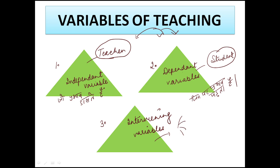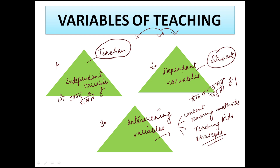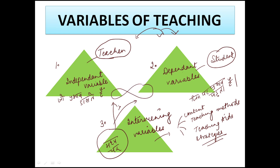The third variable is the intervening variable. Intervening variables include content, teaching methods, teaching aids, and strategies — all those variables we use for teaching. Without them, teaching and learning is not possible, so they intervene in the teaching-learning process. These are the three variables of teaching.